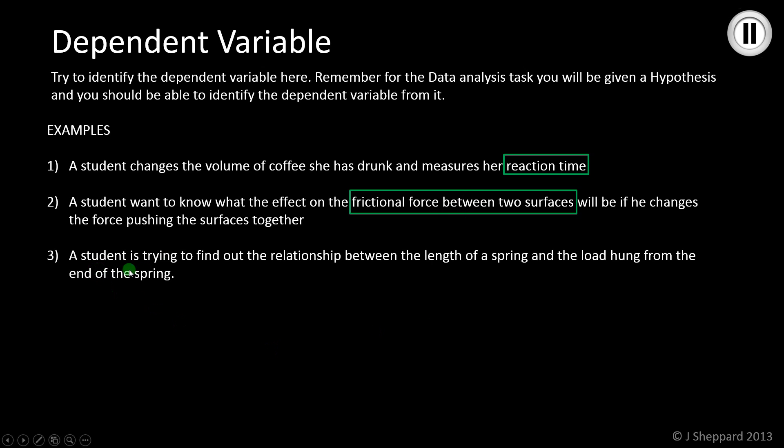Number three: a student is trying to find out the relationship between the length of the spring and the load hung from the end of the spring. Clearly if you were doing that, you would choose to hang different loads from the end of the spring and measure the effect on the length, so the length of the spring is the dependent variable in this experiment. And that's our dependent variable discussion.